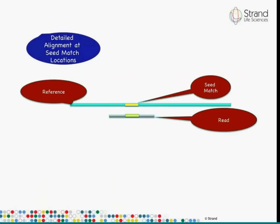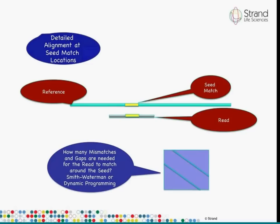Once you have a seed match, you then ask how many mismatches and gaps are needed for the full read to match around that seed at its location in the reference. That is done using the Smith-Waterman dynamic programming algorithm. You use the anchor seed and then apply a Smith-Waterman type algorithm to look around it and determine how many mismatches and gaps are needed. If the number is too many, you don't output a match; if it's within the specified limit, the read is said to match at that location. That's the standard two-step procedure for alignment algorithms.